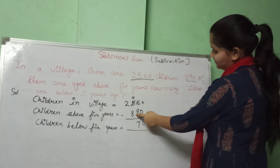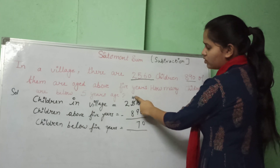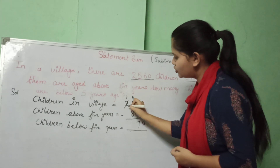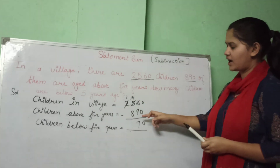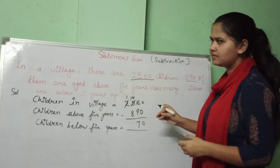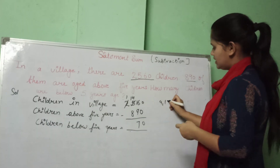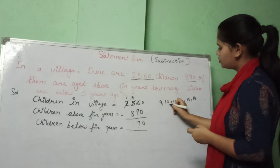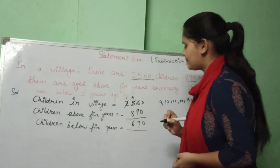Now 8 and 4 — we can't subtract 8 from 4, so 4 takes a borrow from 2. The 2 becomes 1 and 4 becomes 14. From 14 we subtract 8. Counting forward from 9: 10, 11, 12, 13, 14 — that's 6 steps, so the answer is 6.